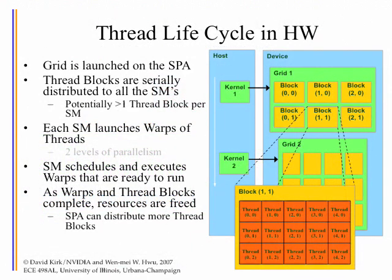Here is the life cycle of a thread. Whenever you launch a grid, that hardware starts generating all the blocks of threads. Thread blocks are serially distributed to all the SMs — each block takes roughly one clock cycle to go into one SM. So if you generate 50,000 blocks but each SM can only hold a small number at once, the logic fills the SMs and then pauses until space opens up.